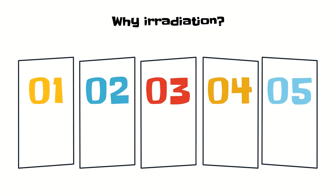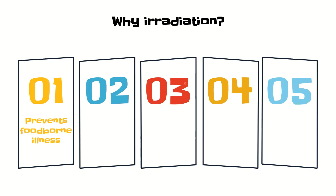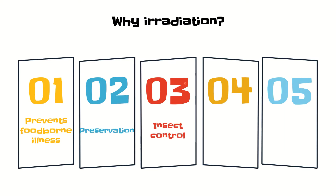Why is radiation used? First, it prevents foodborne illness by inactivating microorganisms and enzymes, which helps in food preservation. It also helps in controlling insects. Another reason is that due to inactivation of enzymes that cause ripening, the ripening process is delayed.